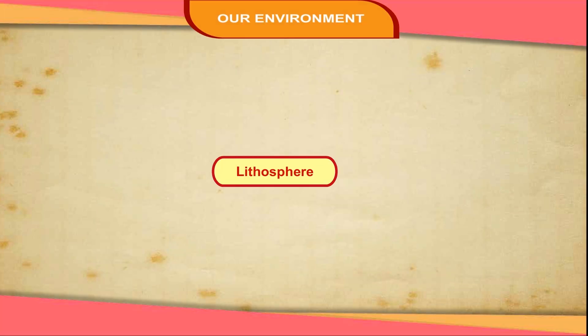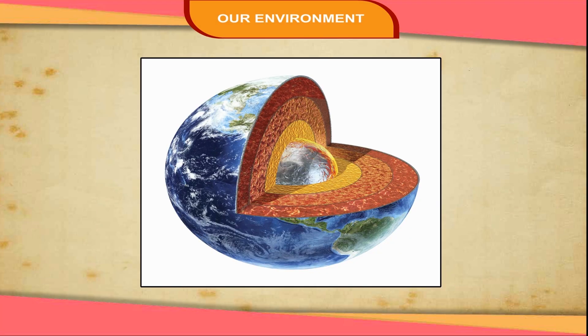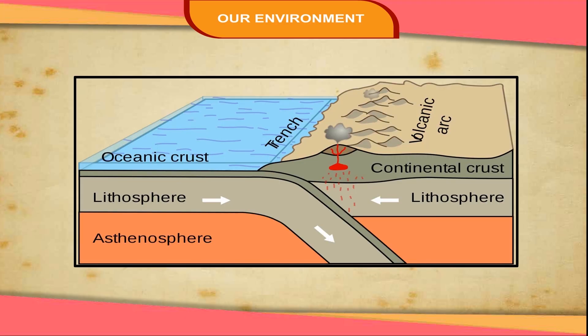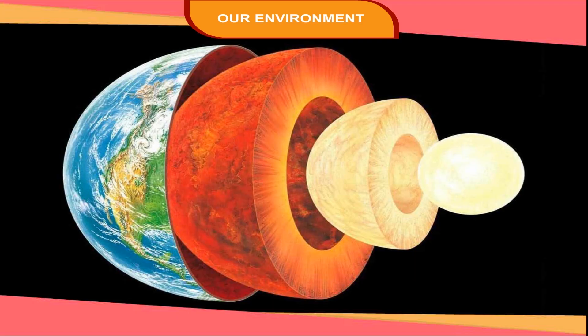Lithosphere. It is the layer of the earth which consists of rock materials. The uppermost layer of the lithosphere is known as the crust, which consists of a variety of rocks. The lithosphere is very important to us because it provides us land to live on and soil for the growth of plants. Most of the human activities are confined to this domain of the environment.